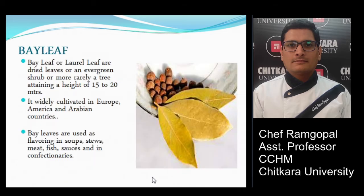The next herb is bay leaf. Dried bay leaves are used in many different culinary preparations. It is cultivated in Europe, America, Arabian countries, and India. Bay leaf is used for flavoring in soups, stews, meat, fish, sauces, and confectionery preparations. One important note: you must remove the bay leaf at the time of presentation or serving, as bay leaves are used only for flavoring purposes and are not meant to be eaten.